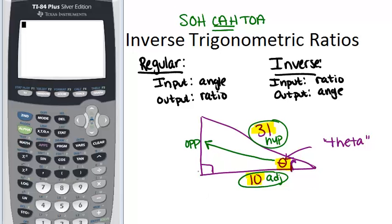So we can set up an equation: cosine of theta must equal 10 over 31, because 10 is adjacent and 31 is hypotenuse.